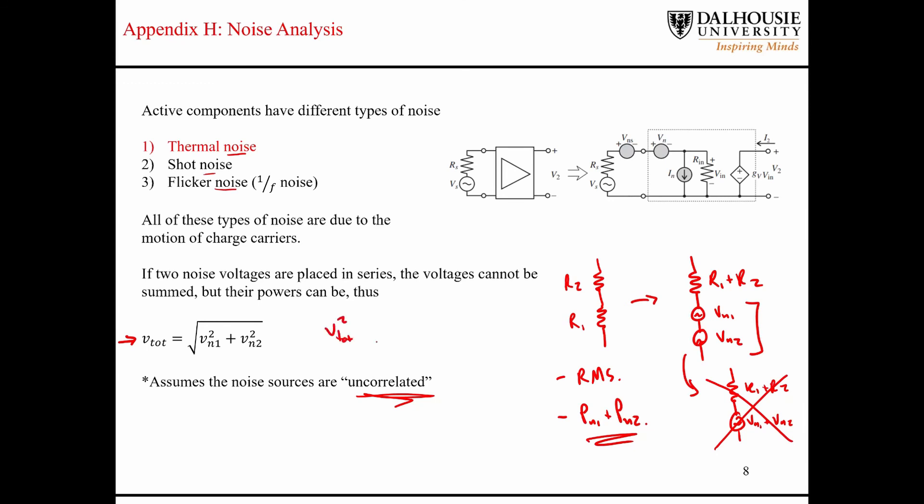So again, I think of this like the total power is the sum of the power due to the individual noise source. This is kind of how I think about it. Okay, so we're not going to look at this in any more detail, but I thought it was at least worth mentioning. So this isn't really discussed in Chapter 9. You can read about it in Appendix H, and there's other good texts out there that are available on the internet that you can find and you can read more about this.